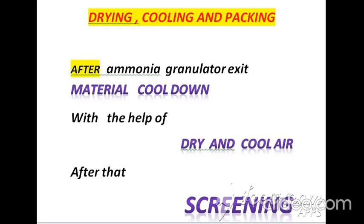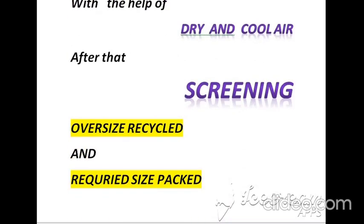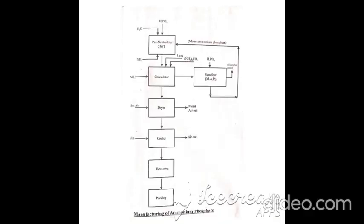The last steps are drying, cooling, and packing. After the ammonia granulator, the exit material is cooled down with the help of dry and cool air. After that, screening takes place — oversize material is recycled back into the process and the required size is packed. After packing, it is ready for sale. At the end, a process flow diagram of the ammonium phosphate manufacturing process is presented to help you better understand and match all the steps with the block diagram.